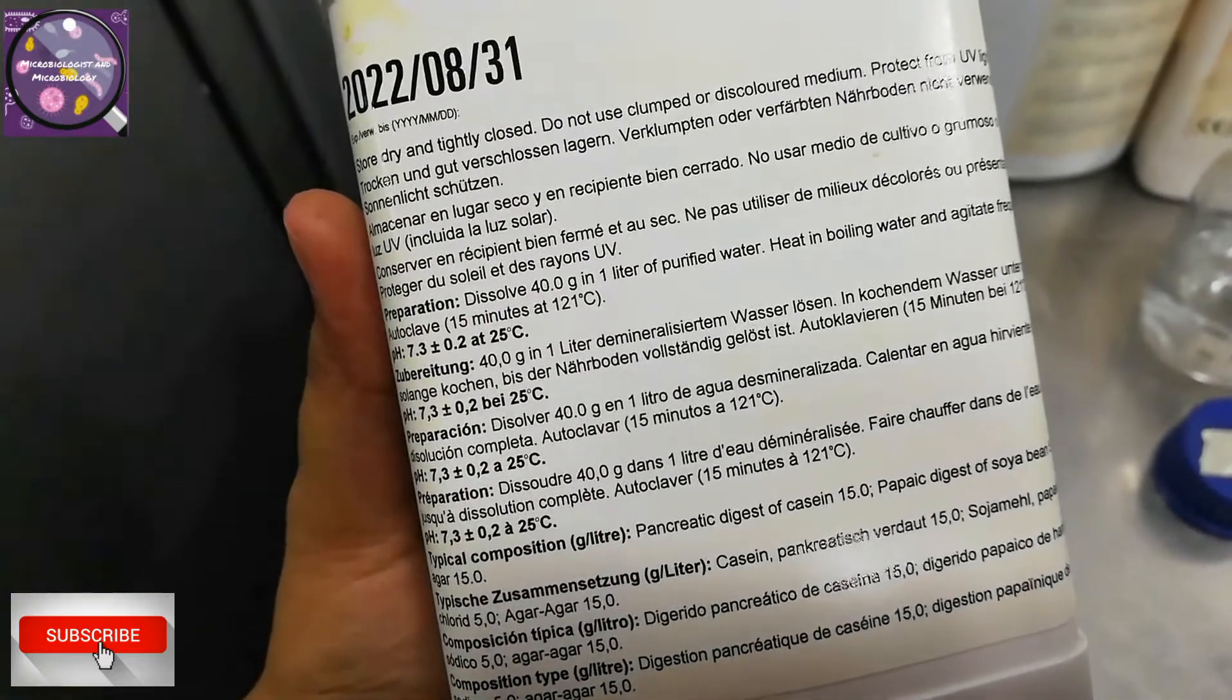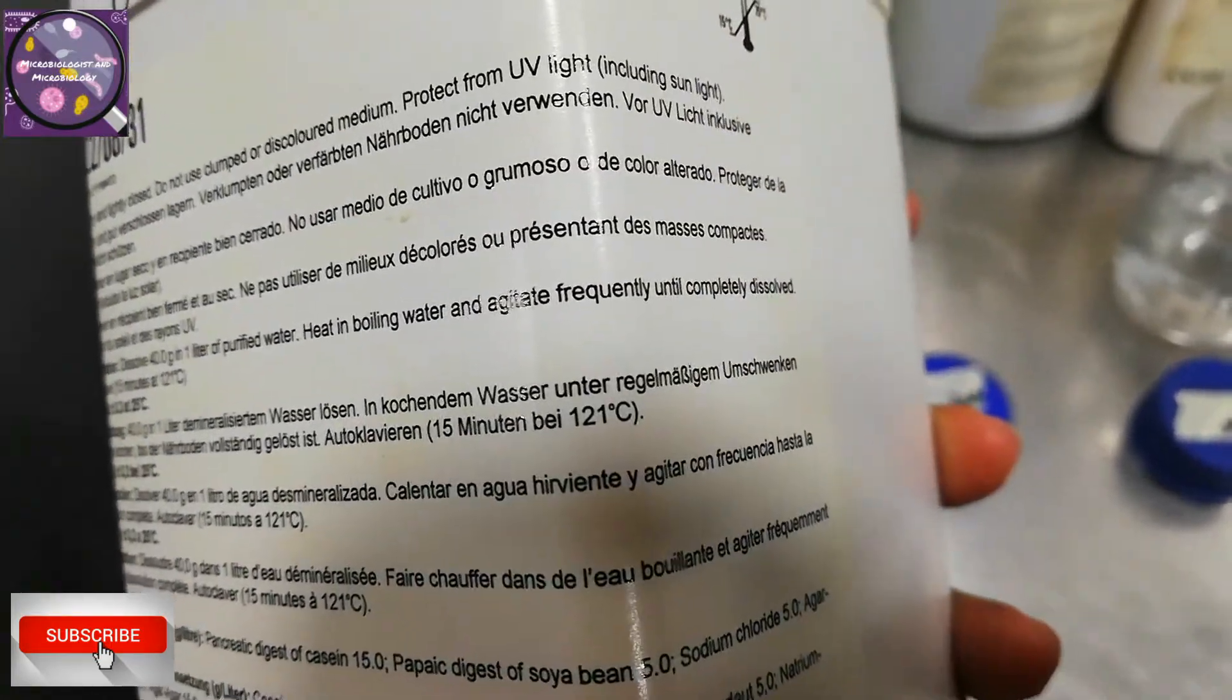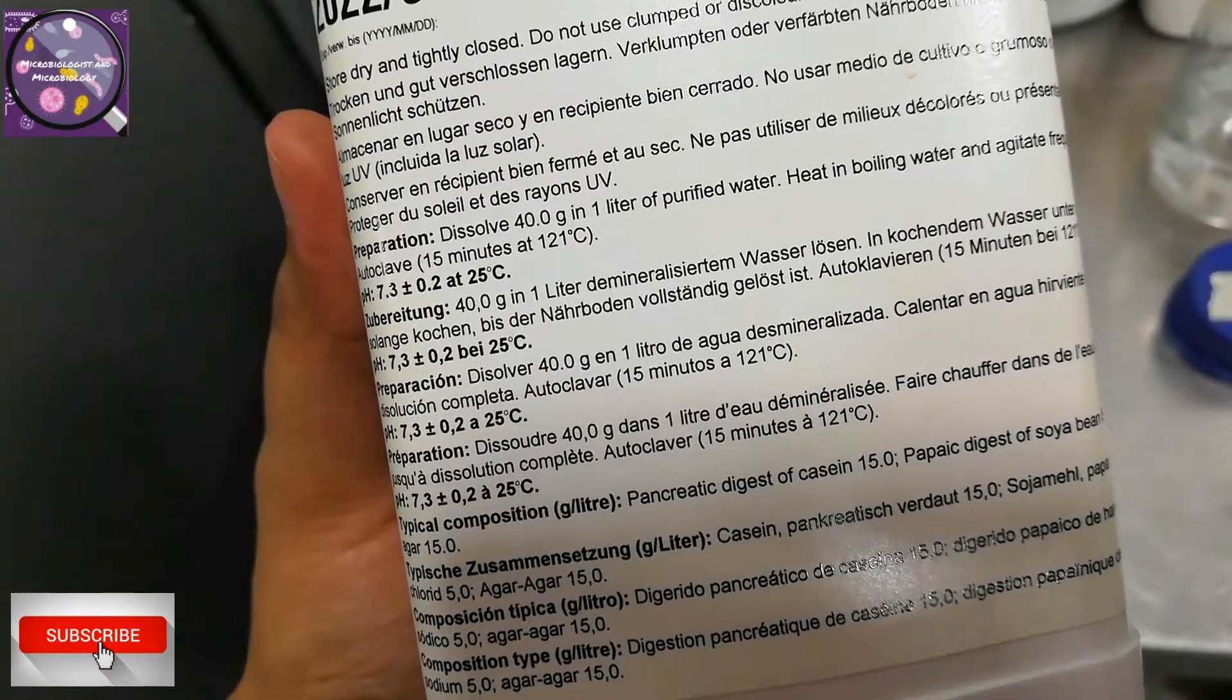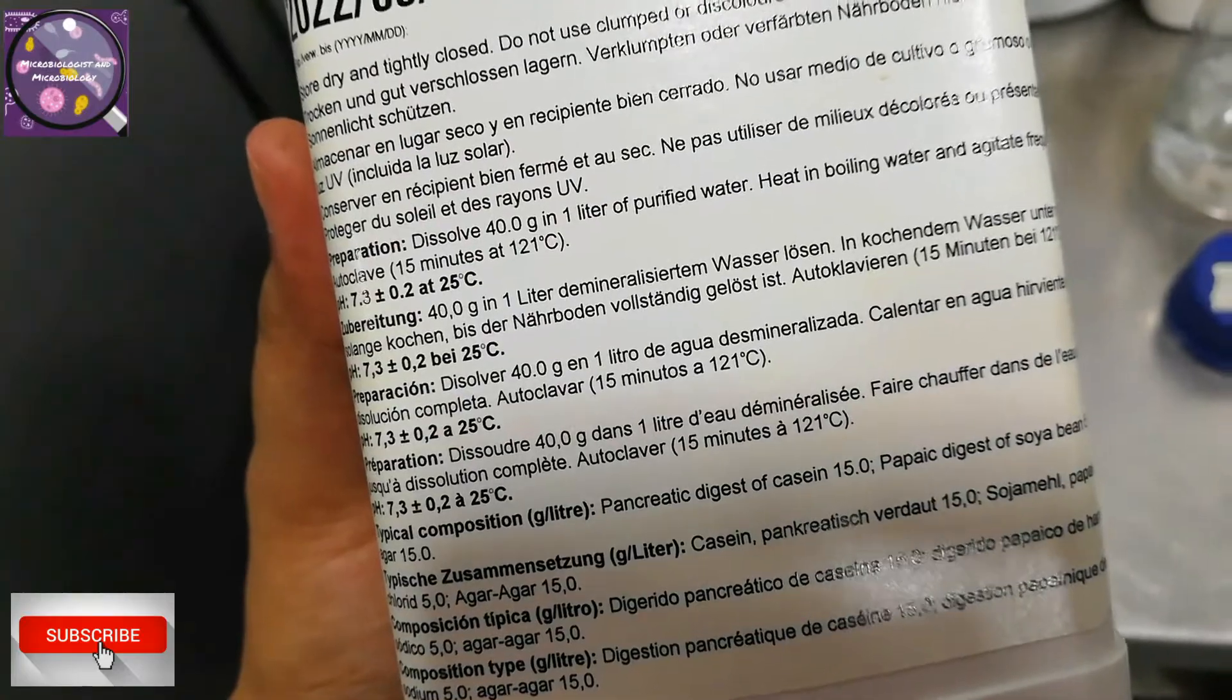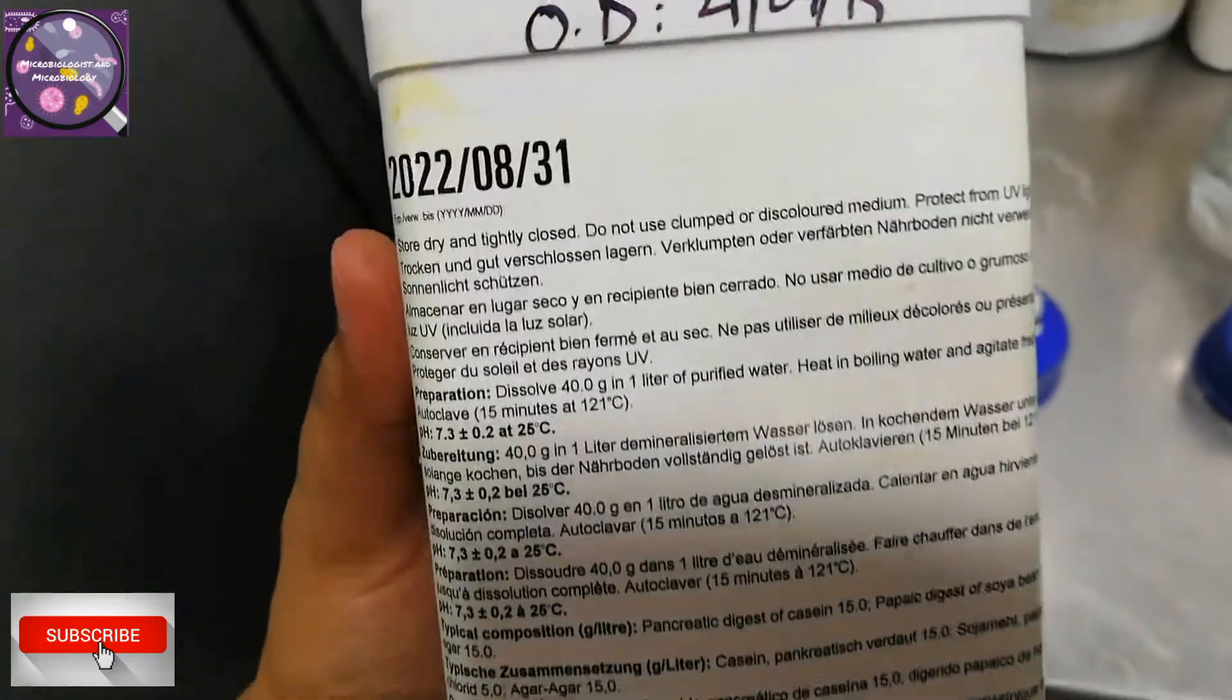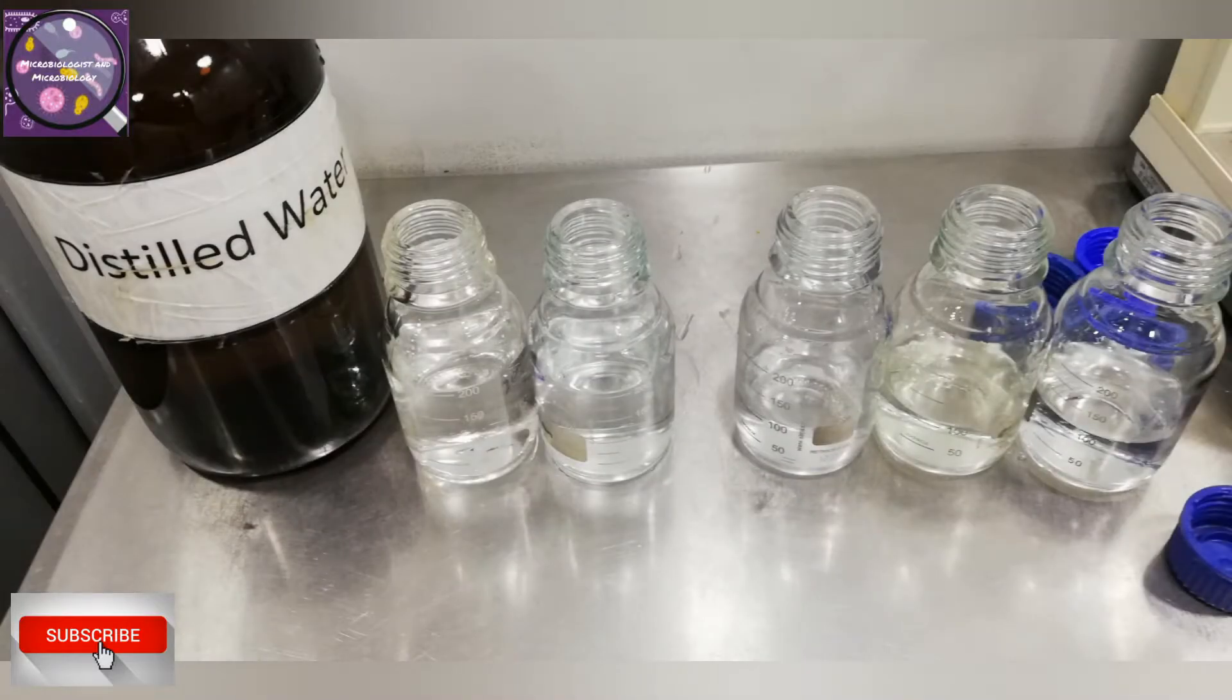Here I will follow the procedure and weigh accordingly. This is a tryptic soy agar bottle and on the back side you can see clearly the procedure and description. It is written as: Dissolve 40 grams in 1 liter of purified water, heat in boiling water and agitate frequently until completely dissolved, then autoclave for 15 minutes at 121 degrees centigrade. I need 200ml of tryptic soy agar media, so I divide 40 grams by 1000ml and multiply by 200ml of required amount. So it will come to 8 grams. Now I am going to weigh 8 grams to dissolve in 200ml purified water.